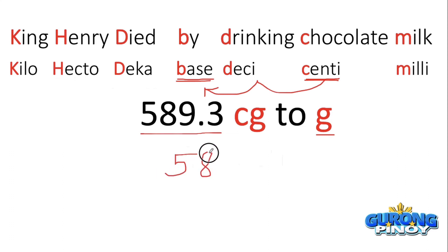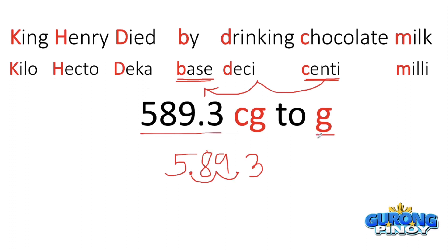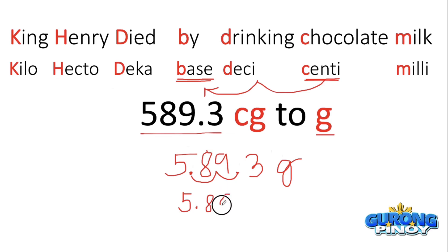Moving the decimal point one, two places to the left gives us the new position. The unit becomes grams — the new unit. So the correct answer is 5.893 grams. That's the correct answer for this conversion.